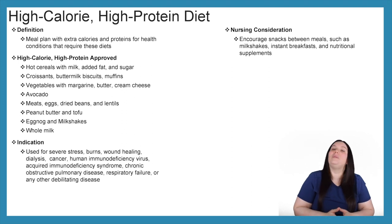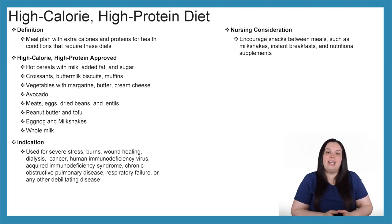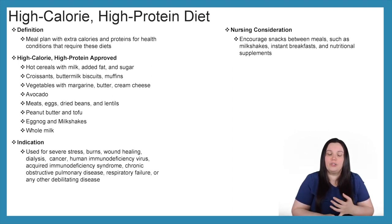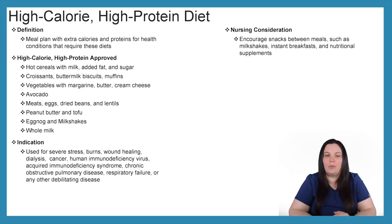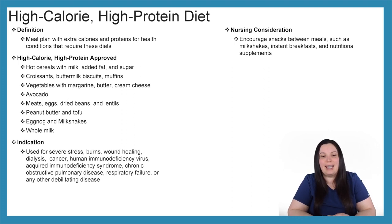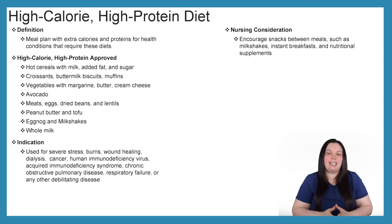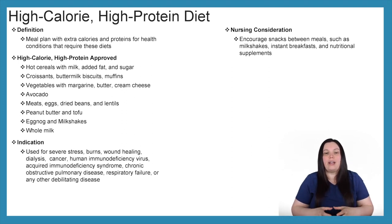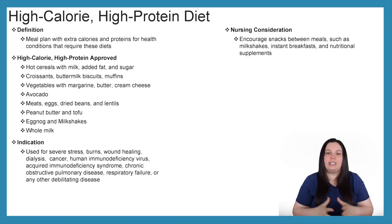Indications for a high calorie, high protein diet include patients with severe stress, burns, wound healing, dialysis, cancer, HIV, AIDS, chronic obstructive pulmonary disease, respiratory failure, or any other debilitating disease — essentially patients who are restricted from adequate food intake due to illness or a debilitating condition.